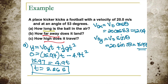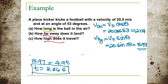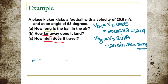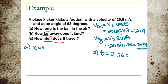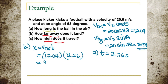For part B, the question is how far away does it land? Remember that time from part A is 3.26 seconds. Since this is the horizontal component, X equals V0x times t, which is 12.04 times 3.26, giving us 39.24 meters. Therefore, the ball lands at a horizontal distance of 39.24 meters.